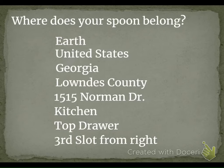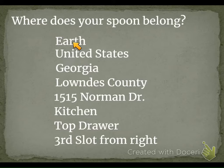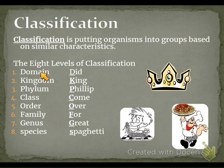Where does your spoon belong? If I asked where does the spoon go while doing dishes, and you said 'earth,' that's not helpful at all. This classification system goes from very general at the top to more and more specific as you go down — like earth, country, state, county, street, house, which drawer, where in that drawer. In the same way, each level of classification becomes more specific. There's only one type of organism at the species level, but at the domain level there are massive numbers.